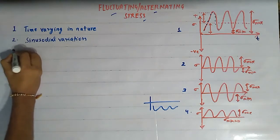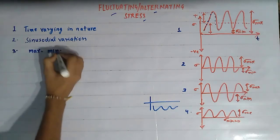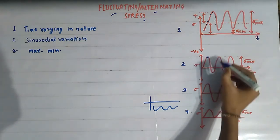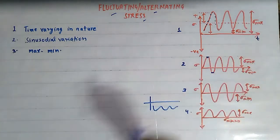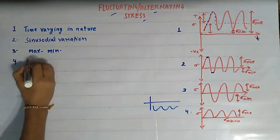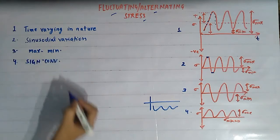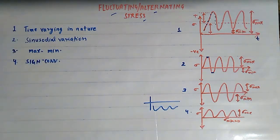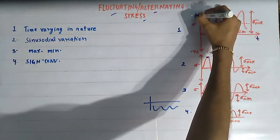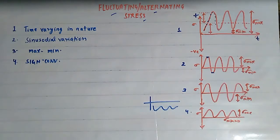The third point is that they vary from a maximum value of stress to a minimum value of stress, as is clear in all the cases. The fourth point is the sign convention: stresses lying above the time axis are denoted by a plus sign and are positive, while stresses lying below the time axis are considered negative in nature.